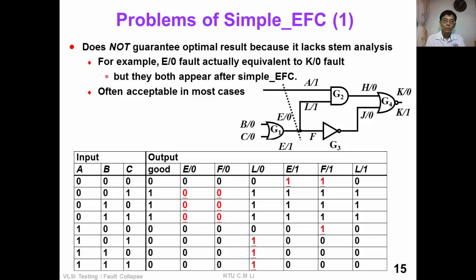The problem with simple equivalent fault collapsing is that it does not guarantee optimal results because it lacks stem analysis. For example, E stuck-at-0 is actually equivalent to K stuck-at-0, as their columns in the table are identical. But after our algorithm, both E stuck-at-0 and K stuck-at-0 appear in our collapsed fault list. This is acceptable in most cases — we don't mind counting equivalent faults twice as long as we don't miss any fault in the circuit.